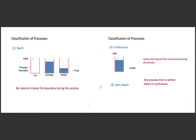There are two classifications of processes: steady state and transient, or unsteady state. A steady state process is where the process variables do not change with time. An unsteady state is where the process variables do change with time.